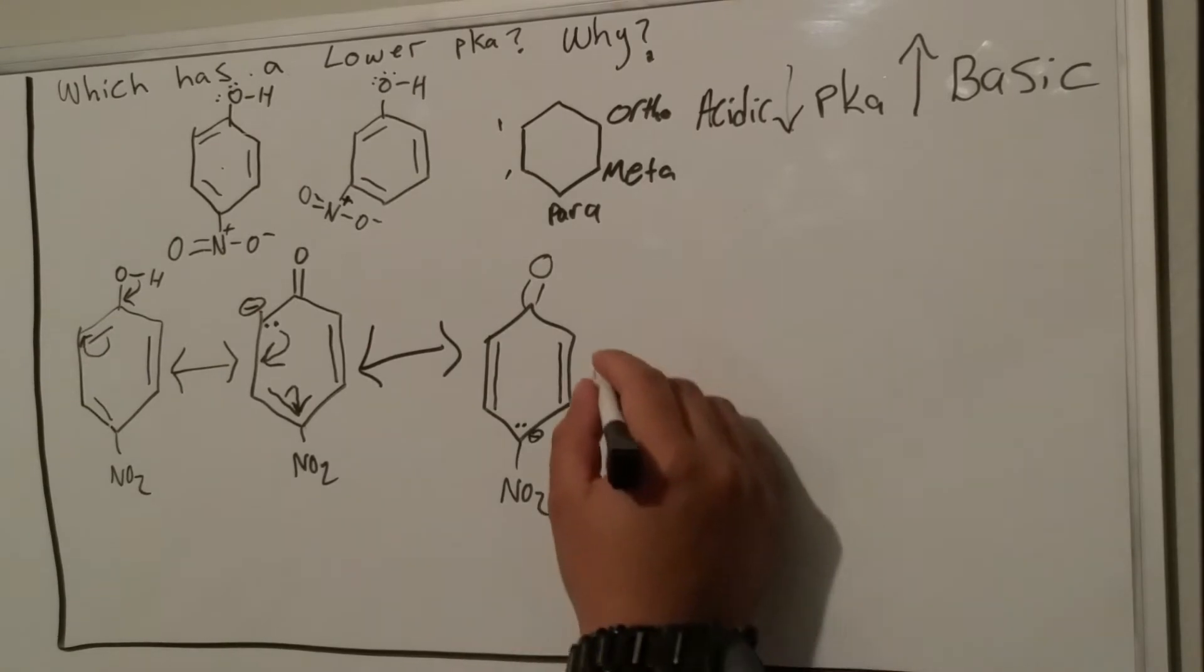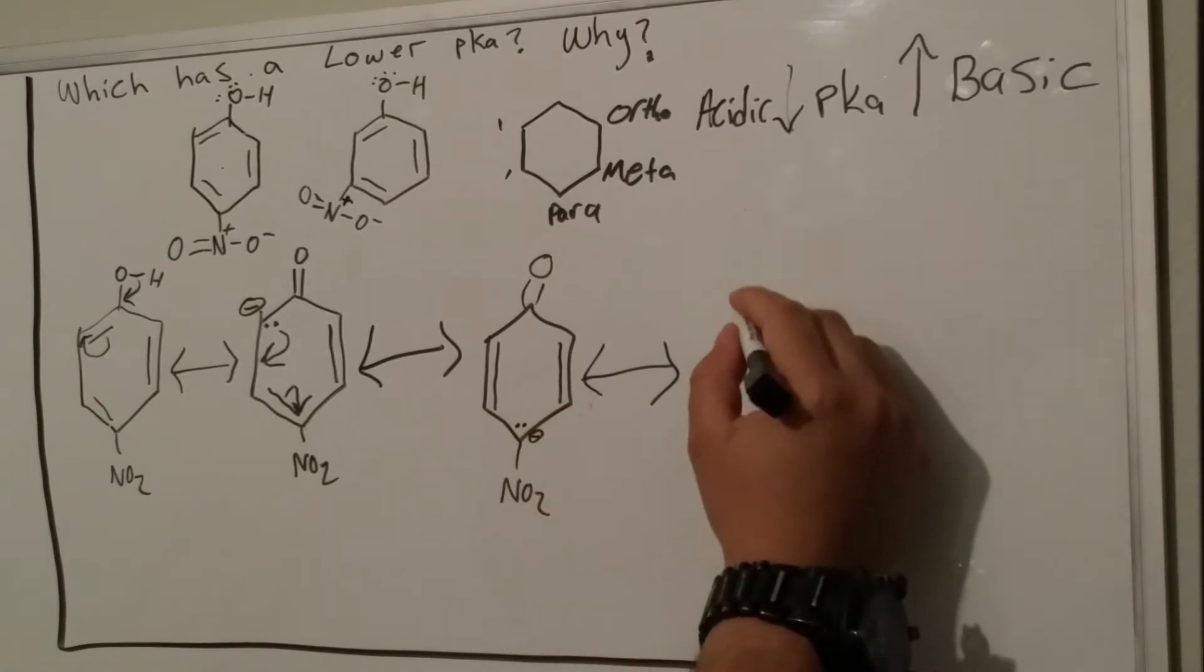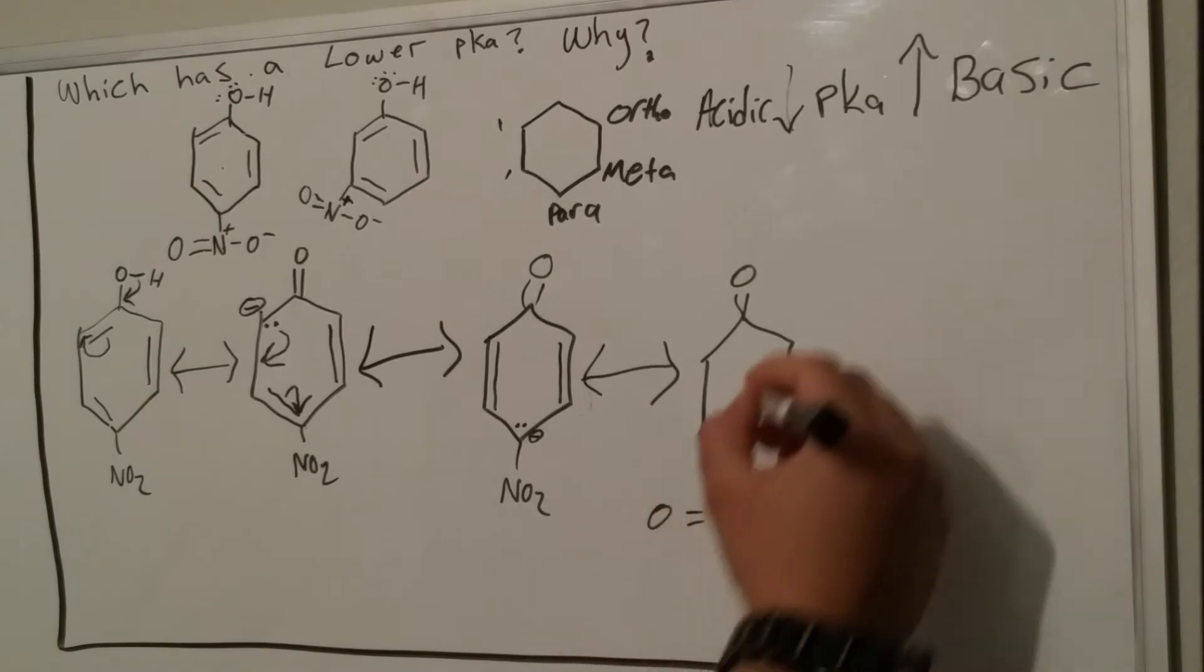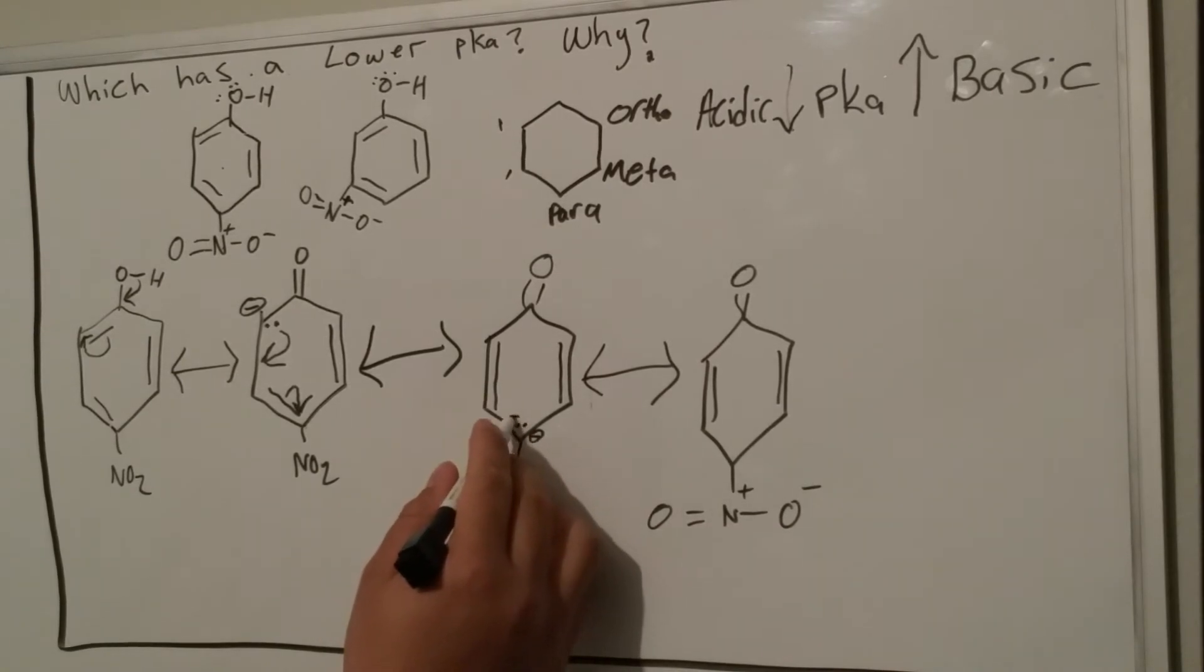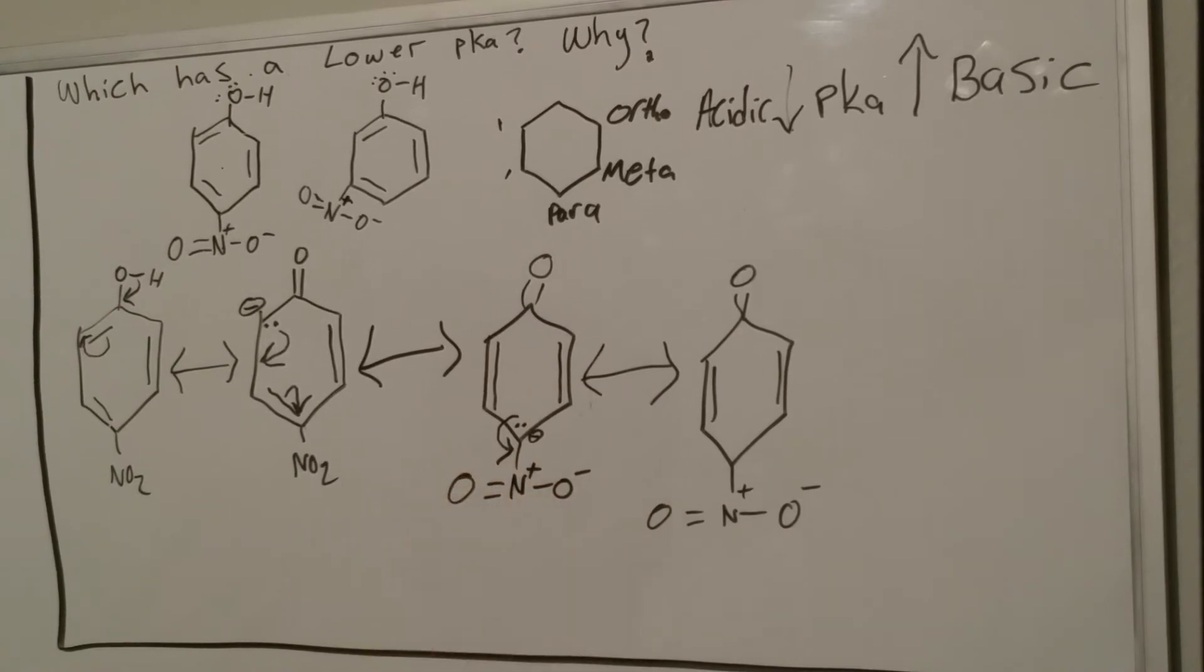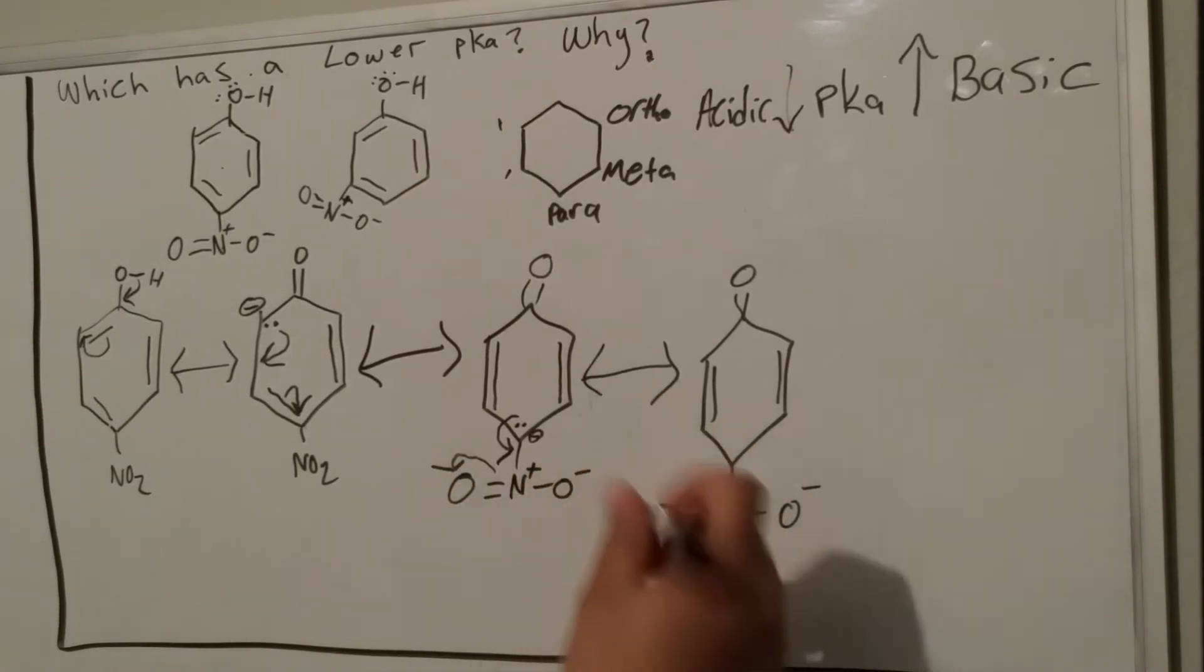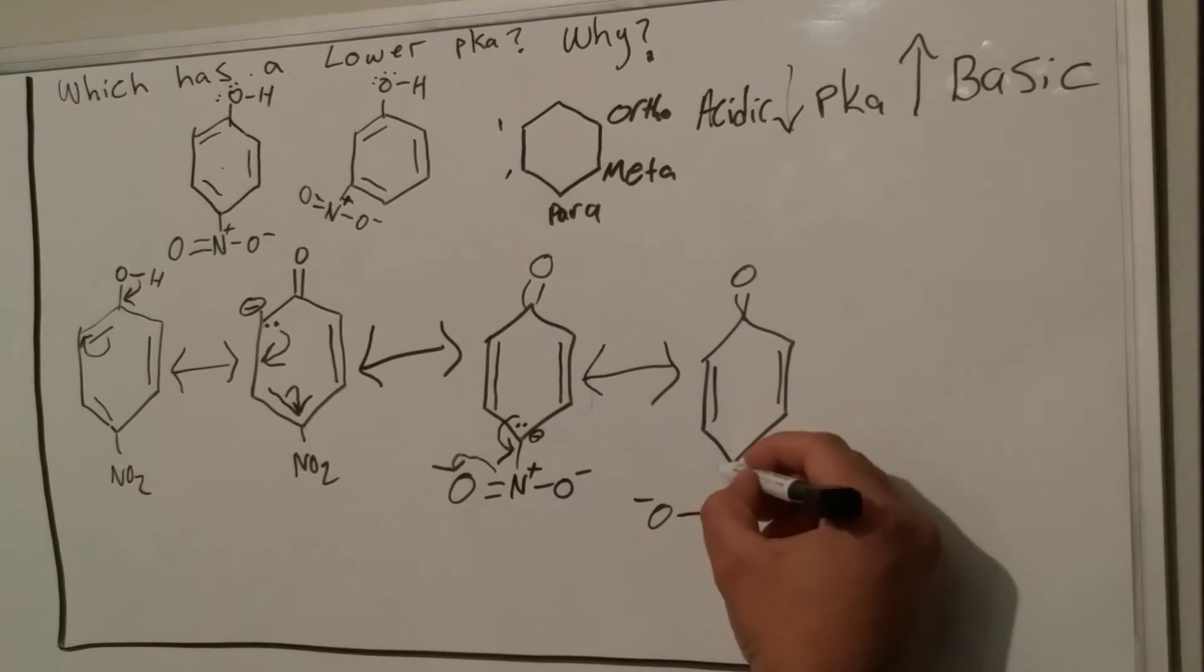This is the very important step into determining whether this resonance structure is better than the one with the meta position. Instead of those electrons moving over and creating a double bond here, these lone pairs go to the nitrogen-carbon bond here. Since that formed the double bond there, these electrons come out and go on to the oxygen.